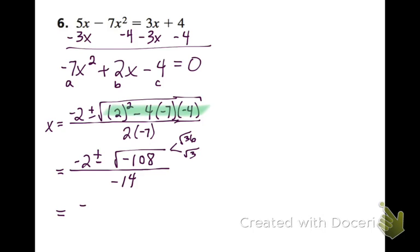So whenever I break this up, I get the square root of 36 is 6, and i comes out because of the negative, and the 3 is left in the square root.